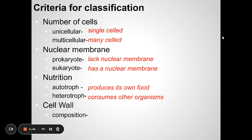The last category is the cell wall. As we talk about cells, we'll discuss the cell wall, which can be made of a variety of materials — cellulose, chitin, and other materials. Those are the big categories that help us put things into different kingdoms.